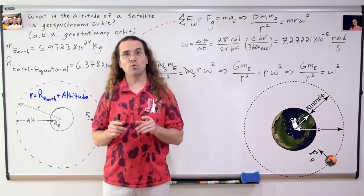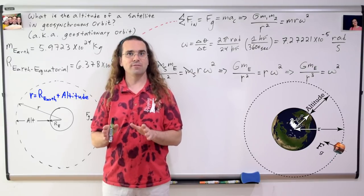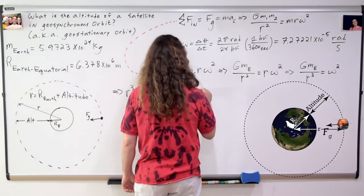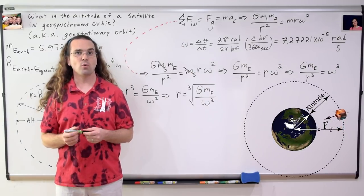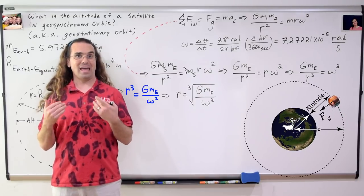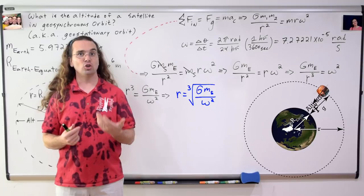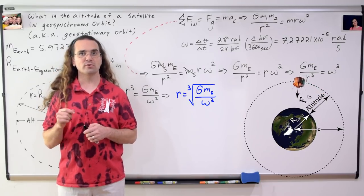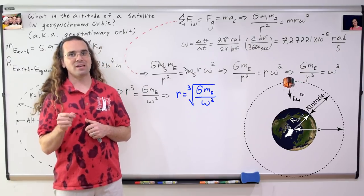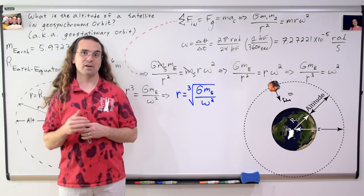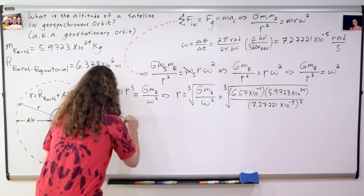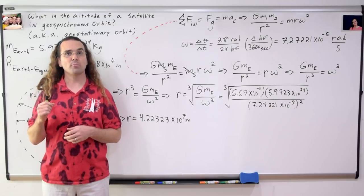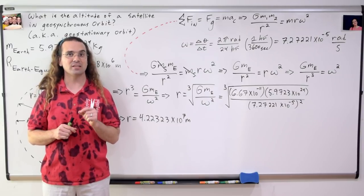Let's solve for the satellite's orbital radius first, and then we will solve for the altitude of the satellite. We can multiply the whole equation by radius cubed and divide by angular velocity squared. Then we can take the cube root of the whole equation to get: radius equals the cube root of the universal gravitational constant times the mass of the Earth, divided by angular velocity squared. Plugging in our numbers gives us a geostationary orbital radius of 4.22323 times 10 to the 7th meters.